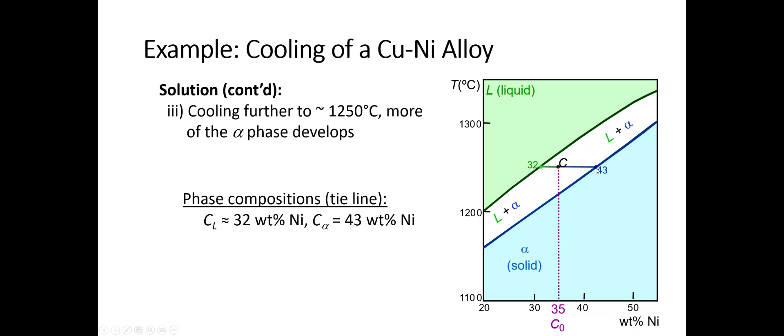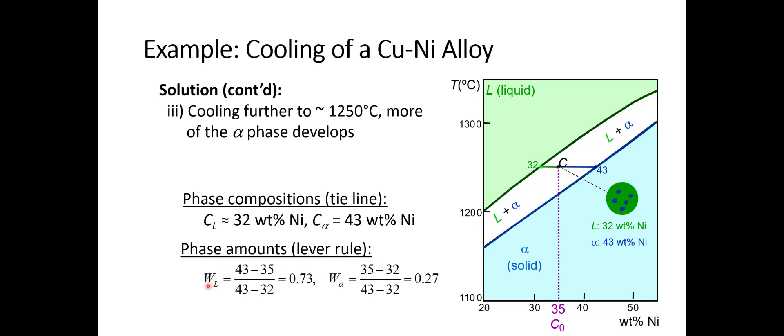Remember, when it began to nucleate, the phase composition of the alpha was 46 percent. Now it's 43 percent. As we go down in temperature, we're going to expect that phase composition of the alpha to go down as well. So as we change the temperature, the phase composition of the alpha phase changes. We use the lever rule and find that the weight fraction of the liquid is about 73 percent, and the alpha is about 27 percent. What we would draw is just a green liquid with now growing alpha phase particles.